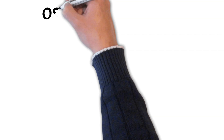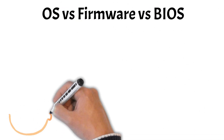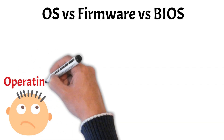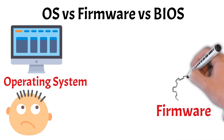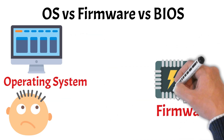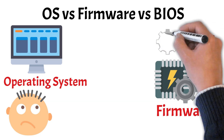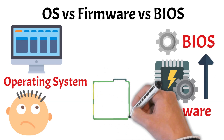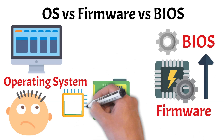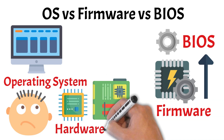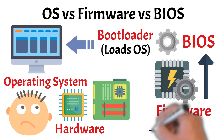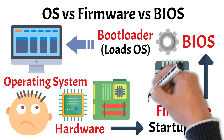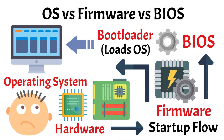Now that we've seen how the OS starts up, it's important to understand where it fits alongside firmware and the BIOS. These components often get confused, but they each serve distinct roles. Firmware is low-level software permanently stored on a chip that provides essential instructions for hardware. BIOS, or Basic Input-Output System, a specific type of firmware, initializes and tests hardware components during startup and loads the bootloader and the OS. In contrast, the operating system is the full-featured software layer that takes over once the hardware is ready, managing resources and enabling user interaction. While the BIOS and firmware act as the system's groundwork, the OS provides the functional environment users interact with daily.